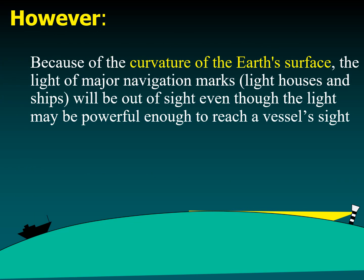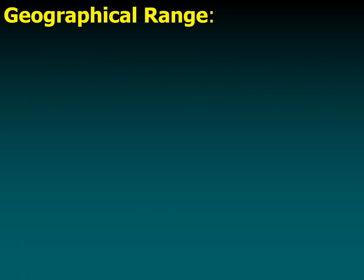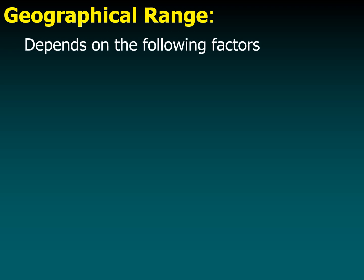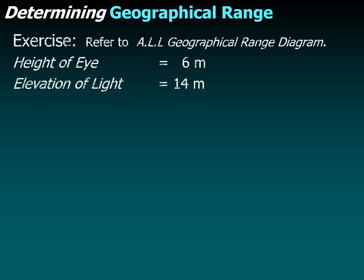However, because of the curvature of the earth's surface, lights of major navigational marks such as lighthouses may be out of sight even though the light is powerful enough to reach a vessel. This brings us to the geographical range, also known as the extreme range. The geographical range is the limiting maximum range a light can be seen due to the height of eye of the observer and the elevation of the light, as dictated by the curvature of the earth.